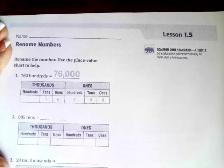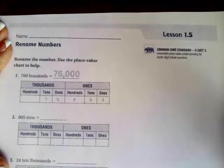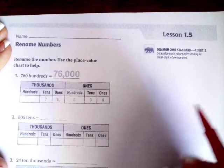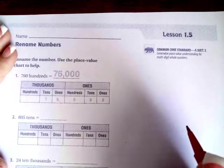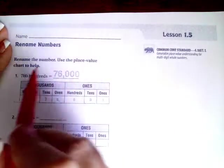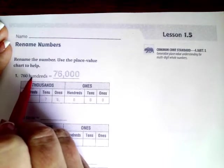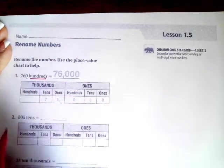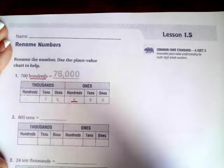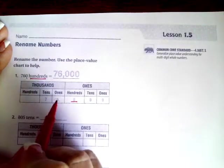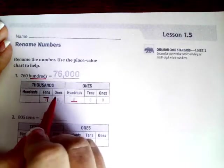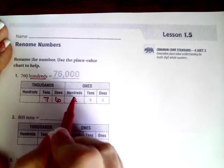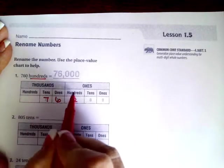Hi guys, welcome to fourth grade chapter 1 lesson 5. I'm going to go ahead and get started. I want to show you guys a little trick that will help you with this. You'll see that this is seven hundred and sixty hundreds, which means that the last number in seven hundred and sixty should be in the hundreds place. So you'll see the seven six zero, seven hundred and sixty, and the last one is in the hundreds place. You just fill in the last two with zeros.